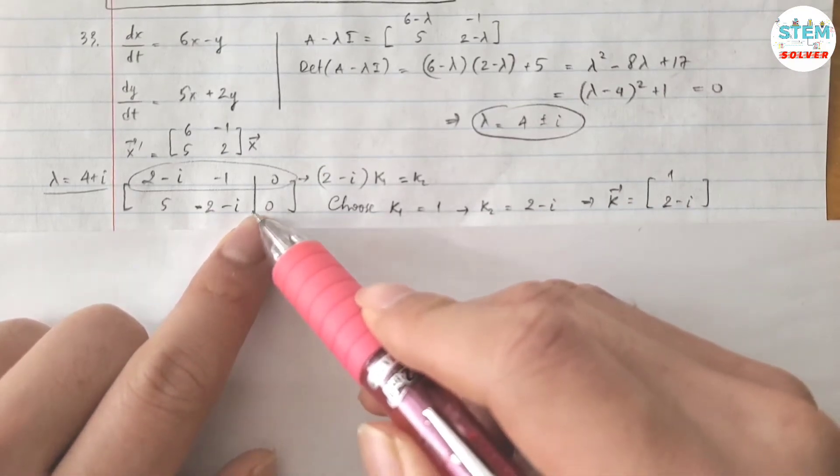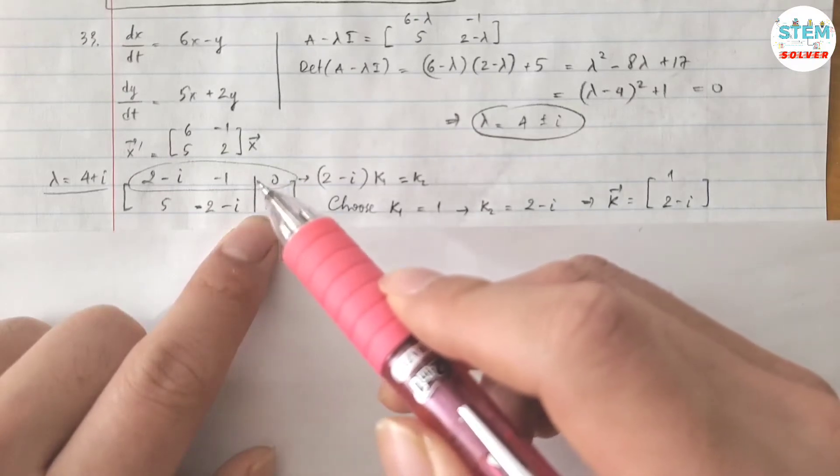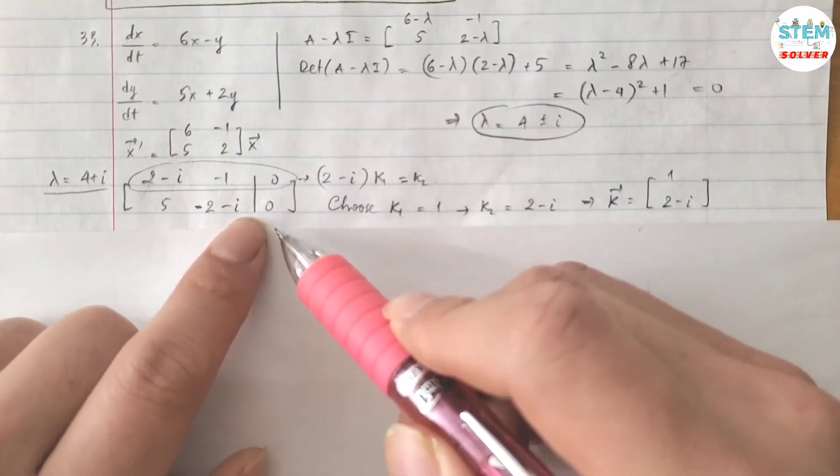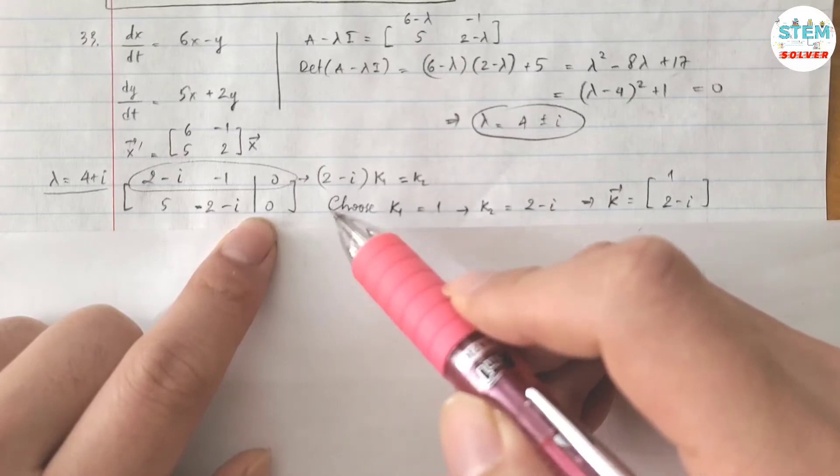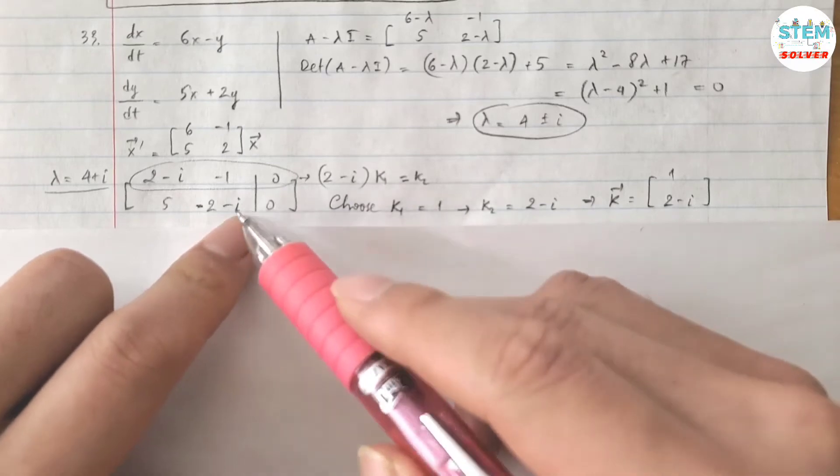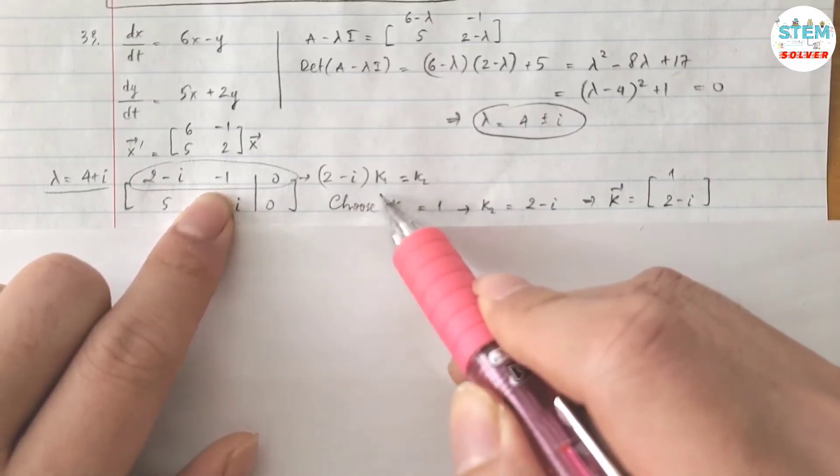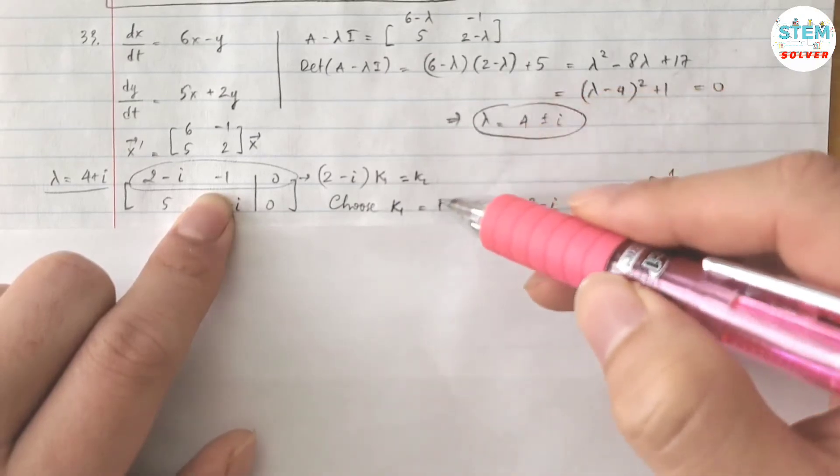So I know that this will give me an infinite solution if I am about to solve it. So instead of going through those matrices, I just use this directly. So use the first equation, I have (2 - i) times k1 equals k2. If I use k1 = 1,